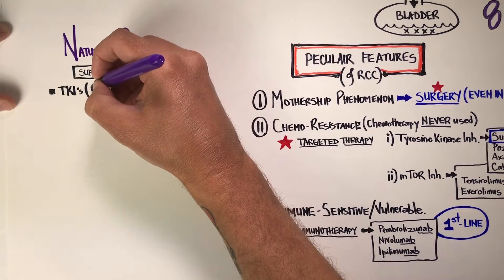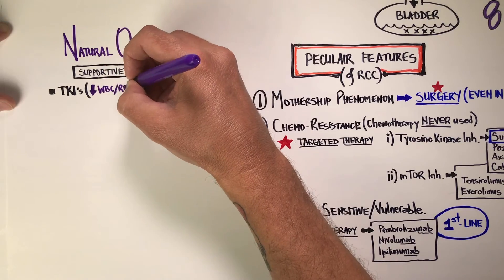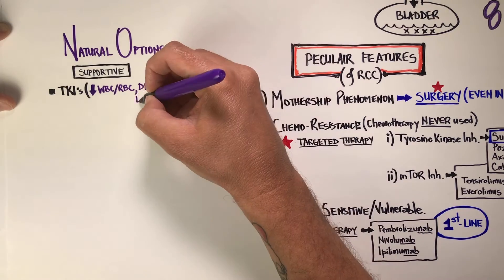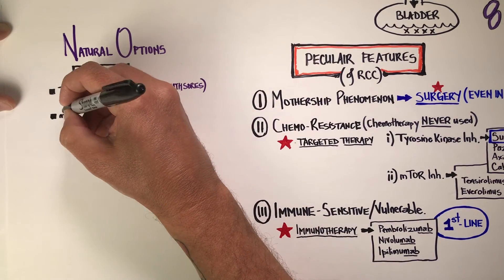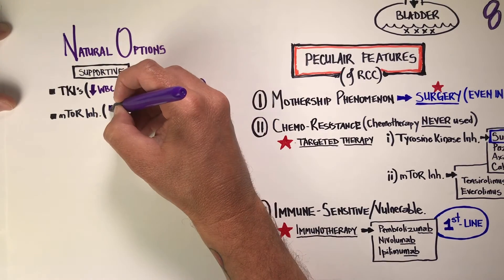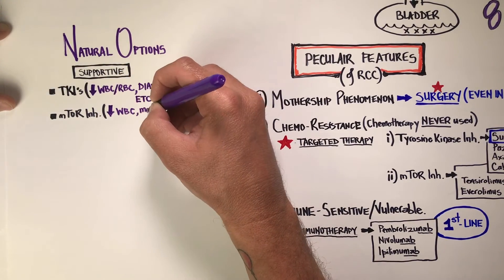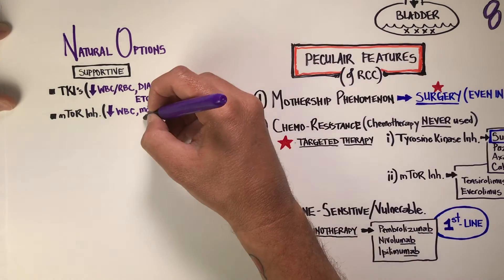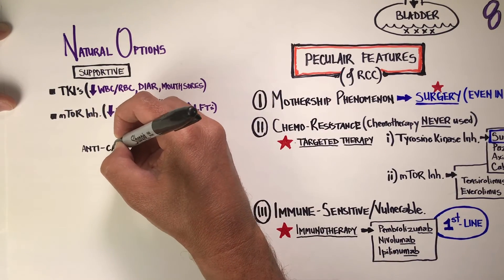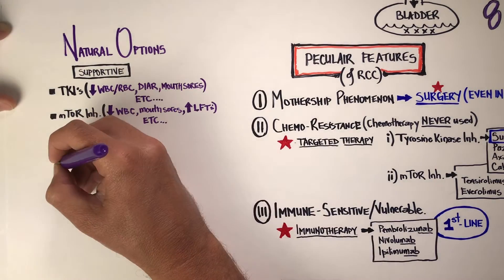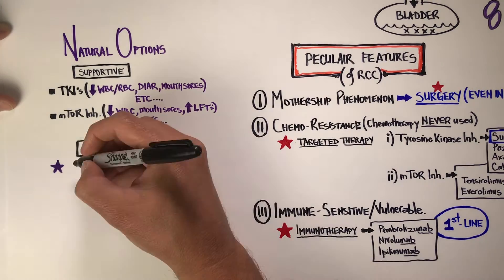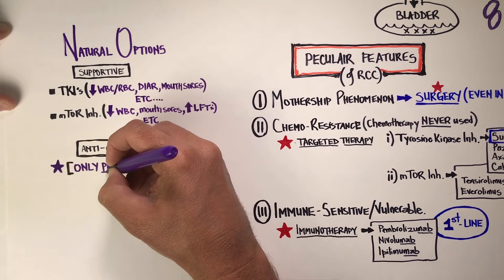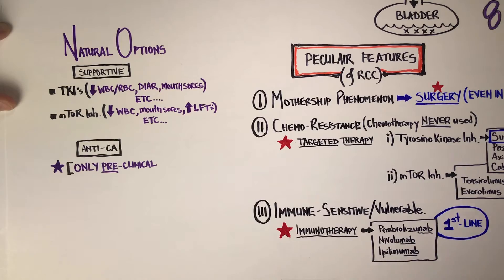Looking at natural options — starting with supportive priorities. On tyrosine kinase inhibitors, very common side effects include low blood counts (white and red blood cells), diarrhea, and mouth sores. With mTOR inhibitors, we see a similar profile: low white blood cell counts, mouth sores, and elevated liver function tests. There is a great deal that can be done naturopathically to help tolerate these treatments, which is a main priority with my patients.